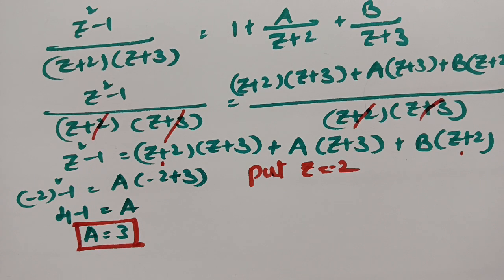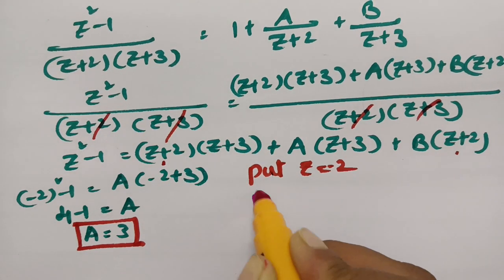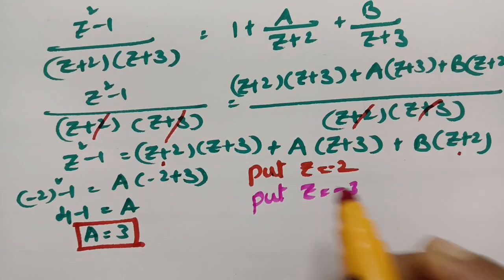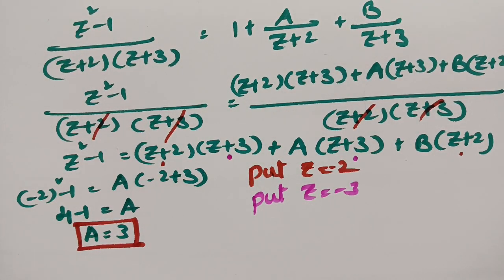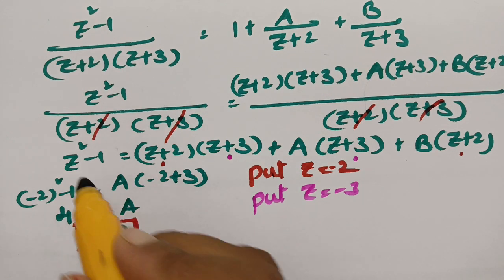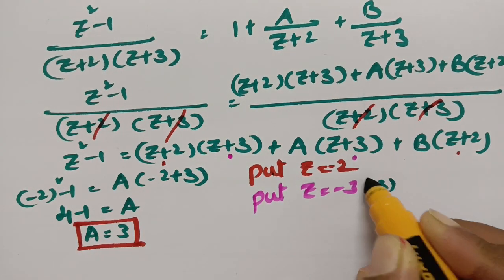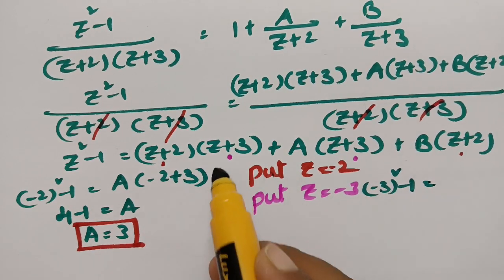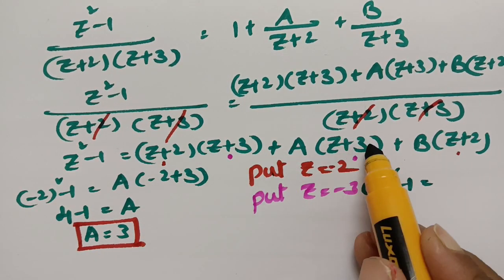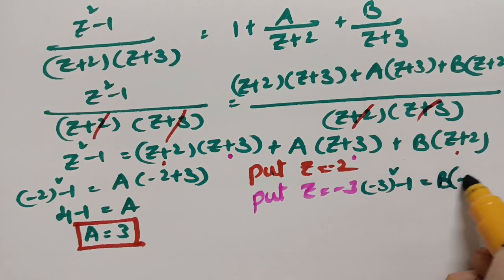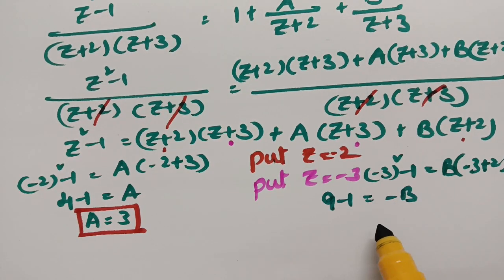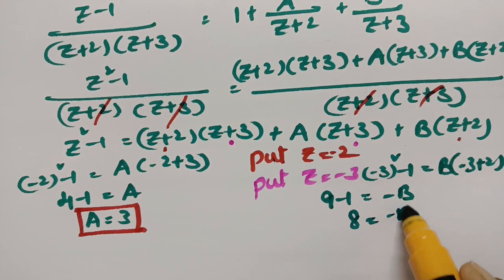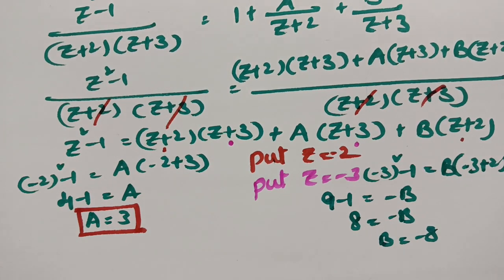Next, put z = -3. The terms with (z+3) become 0. So (-3)²-1 = B(-3+2), giving 9-1 = B(-1), so 8 = -B, and therefore B = -8.